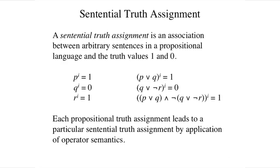A sentential truth assignment, as opposed to a propositional assignment, is an association between arbitrary sentences in a propositional language and the truth values 1 and 0. Unlike propositional truth assignments, sentential truth assignments are not arbitrary. Given a truth assignment for the proposition constants of a language, the semantics of logic fixes the truth assignment for all compound sentences in that language.